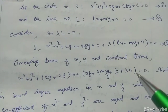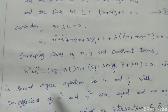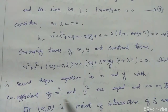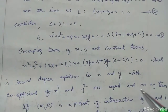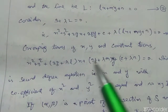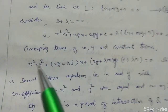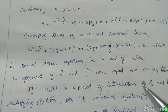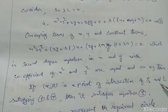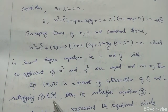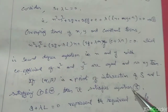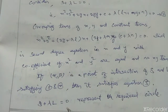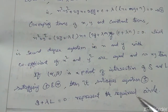This is a second-degree equation in x and y where the coefficients of x² and y² are equal and there is no xy term, confirming it represents a circle. If (α, β) is a point of intersection of S and L satisfying both equations, then it satisfies this equation as well. Therefore, S + λL = 0 represents the required circle passing through the intersection of S and L.